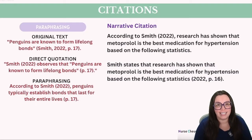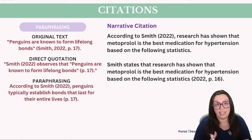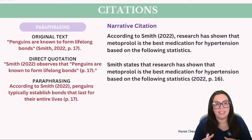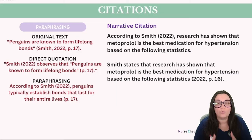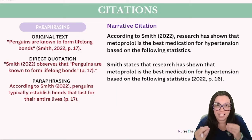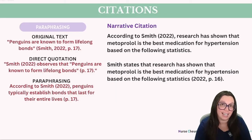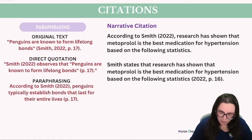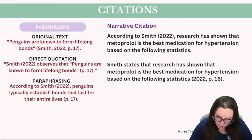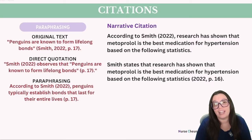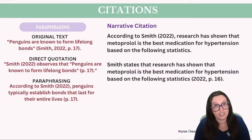In narrative citations or paraphrasing, we integrate citation details directly into the text. The year and if applicable the page number are enclosed in parentheses, placed immediately following the author's name within the sentence or at the sentence's conclusion just before the final period. What makes this citation different is we don't use quotation marks, because we're not verbatim quoting the text — we are paraphrasing. For example: 'According to Smith (2022), research has shown that metoprolol is the best medication for hypertension based on the following statistics.' This information is being paraphrased from Mr. Smith's article.